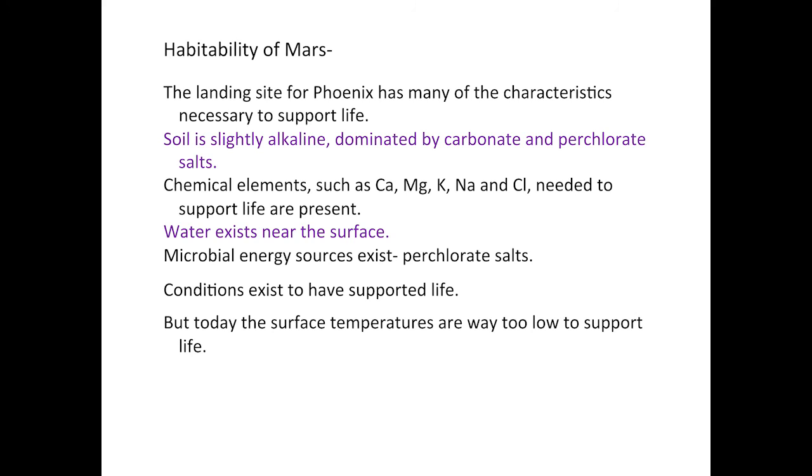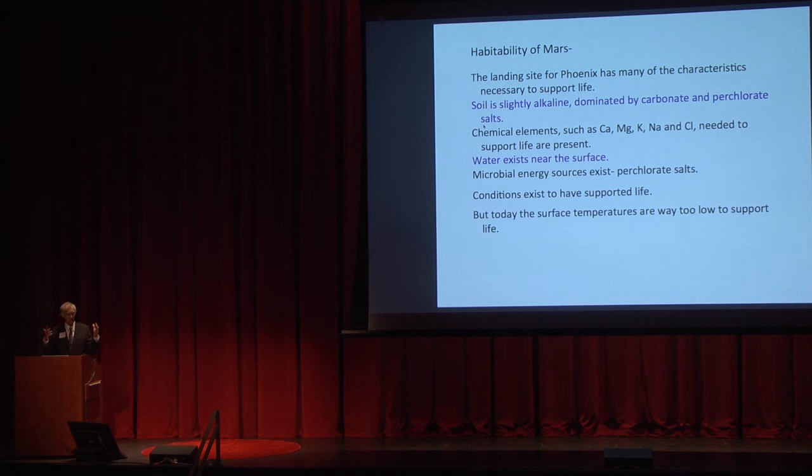So now let's talk a little bit about the habitability of Mars. The landing site for Phoenix has many characteristics necessary to support life. The soil is slightly alkaline, dominated by magnesium perchlorate salts. Alkaline soils are great for growing asparagus. In fact, when they announced that we had perchlorates on Mars, somebody immediately put out t-shirts showing asparagus growing out of the surface of Mars. Maybe astronauts would like asparagus as a food source on Mars. You'd have to have a greenhouse. Chemical elements such as calcium, magnesium, potassium, sodium, and chlorine needed to support life are present on Mars. And we know now that water exists near the surface and we found the perchlorate salts. And so there are sources for microbial life to exist because there are energy sources for that. So conditions exist on Mars to have supported life. But today the surface temperatures are way too low to support life as we know it here on Earth.